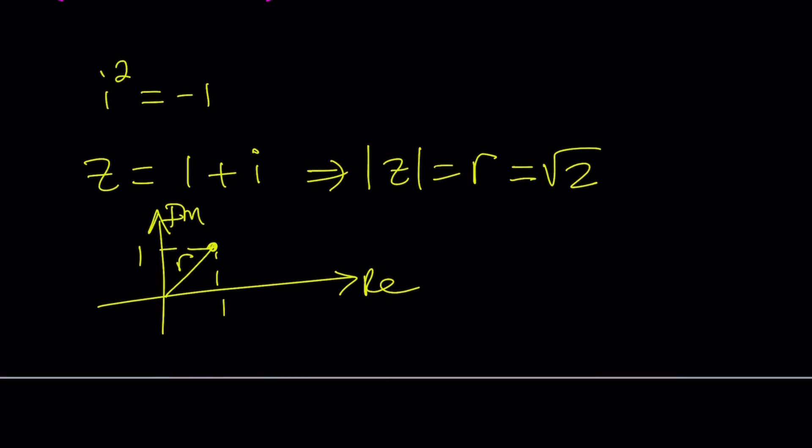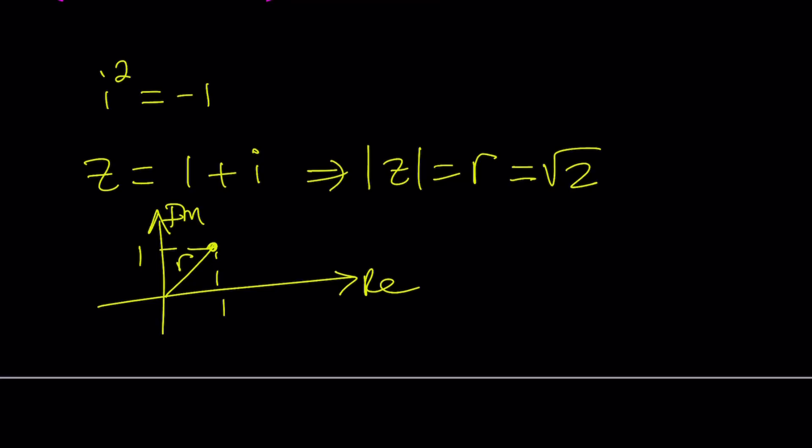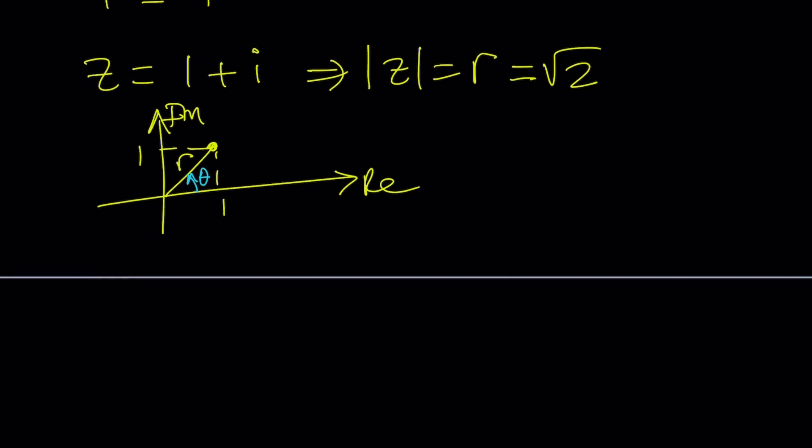We do need another thing, which is the argument or the theta or the angle. This is how we find it. z equals 1 + i, but I got the r so I'm going to pull it out. I'm taking out square root of 2.